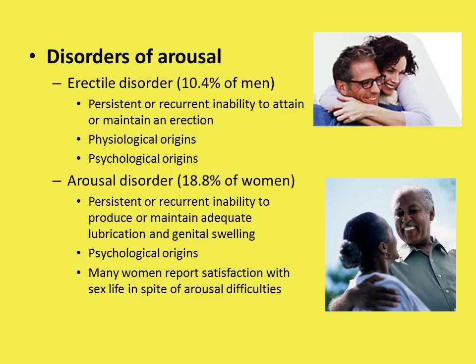It is a vicious repetitive cycle, because if it happens once and they're scared it's going to happen again, it is likely to happen again due to the anxiety around it. There is an ongoing debate about what percentage of erectile dysfunctions are due to psychological versus physiological factors. Psychological factors include anxiety, high levels of stress or fatigue, depression, discord in the relationship, and excessive alcohol use.